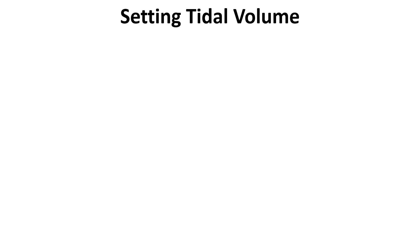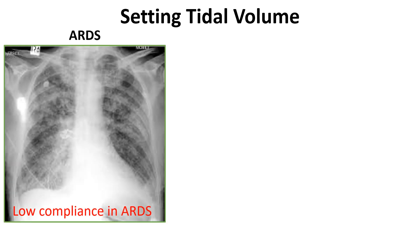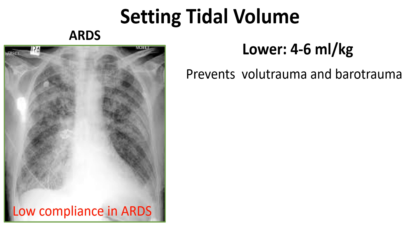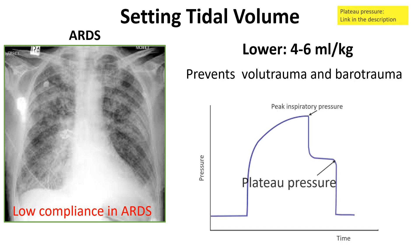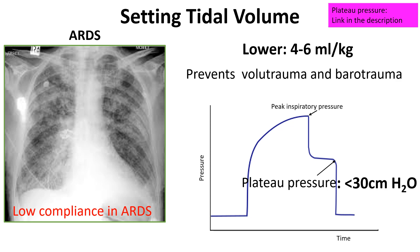In the case of acute respiratory distress syndrome, where lung compliance is reduced, a common recommendation is to use lower tidal volumes, generally between 4 to 6 milliliters per kilogram. Using lower tidal volumes reduces the risk of lung overdistension and injury. Output parameters such as plateau pressure can guide tidal volume adjustments, with most clinicians aiming to keep plateau pressure below 30 centimeters of water.